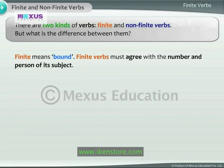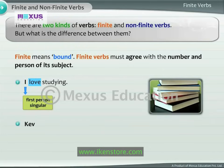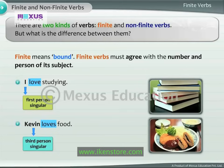Let us read the following examples. 'I love studying.' In this sentence, the finite verb 'love' agrees with the subject 'I.' 'I' is the first person singular. Now look at this sentence: 'Kevin loves food.' The finite verb 'loves' agrees with the subject 'Kevin.' Kevin is the third person singular. So we can see that the finite verb agrees with the subject completely.